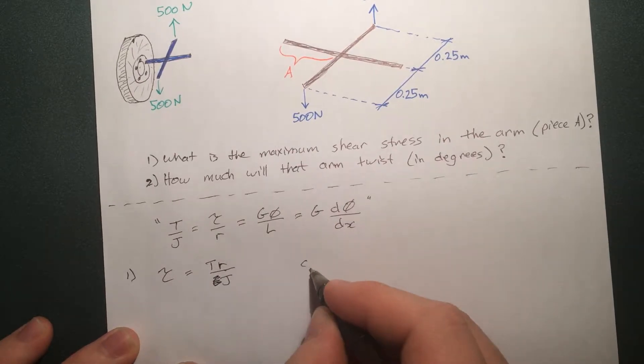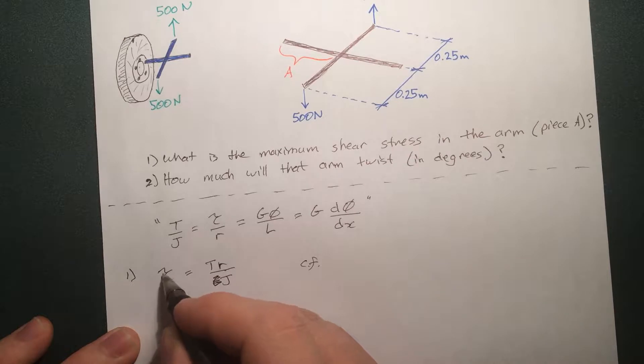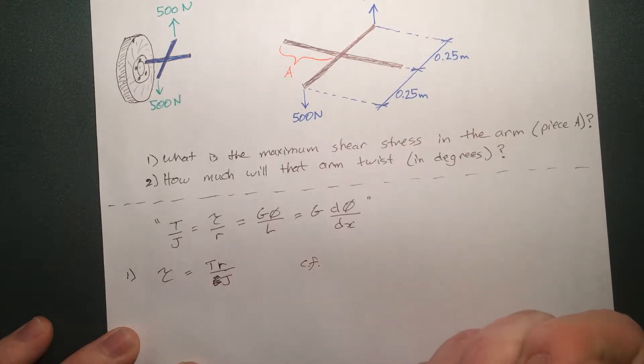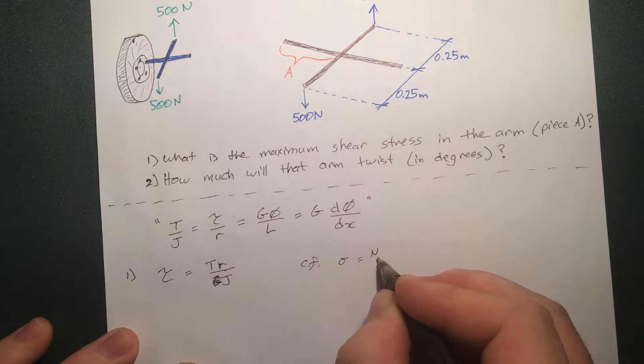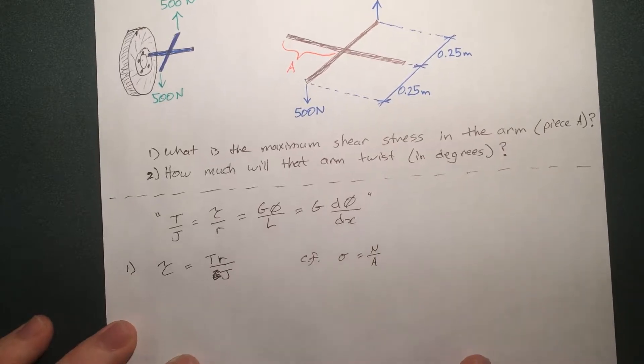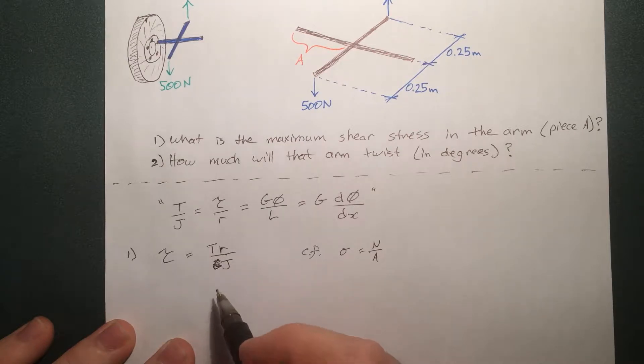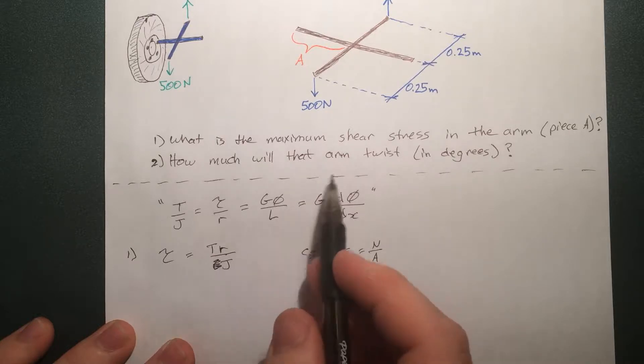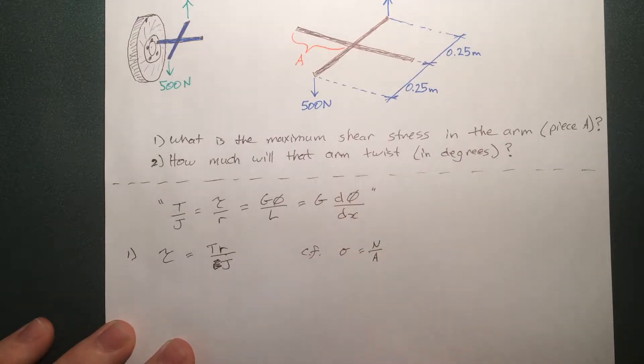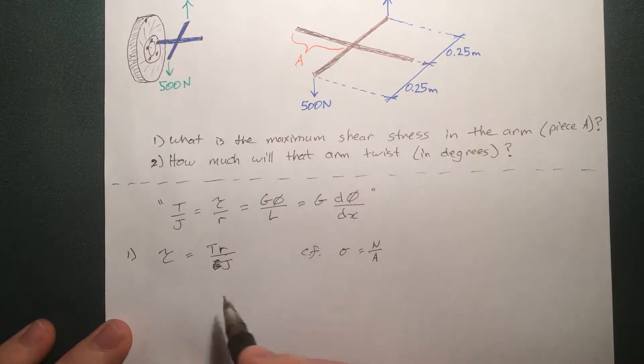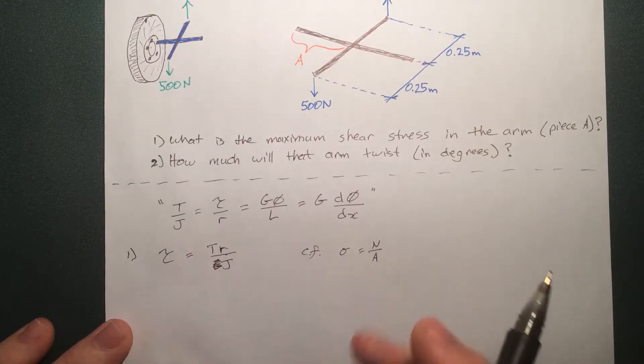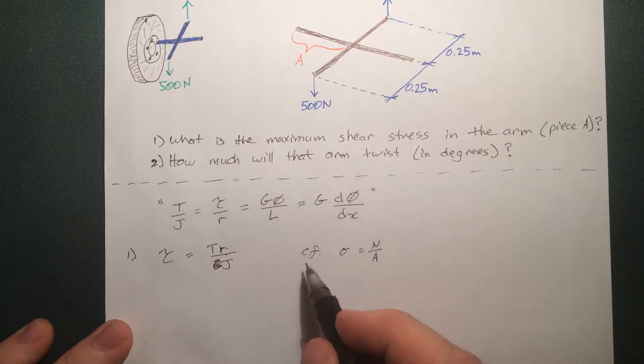Now compare this to not shear stress but just regular stress, or normal stress. That's force over area. It's essentially the same. Our torque is the equivalent of our force and the J is the equivalent of the area. In this case, we need the R in here because the shear stress is not constant as we go through the radius, it's going to increase. I just like to make a comparison between these two equations just so I keep track that this stress is a stress and not some other abstract weird concept.